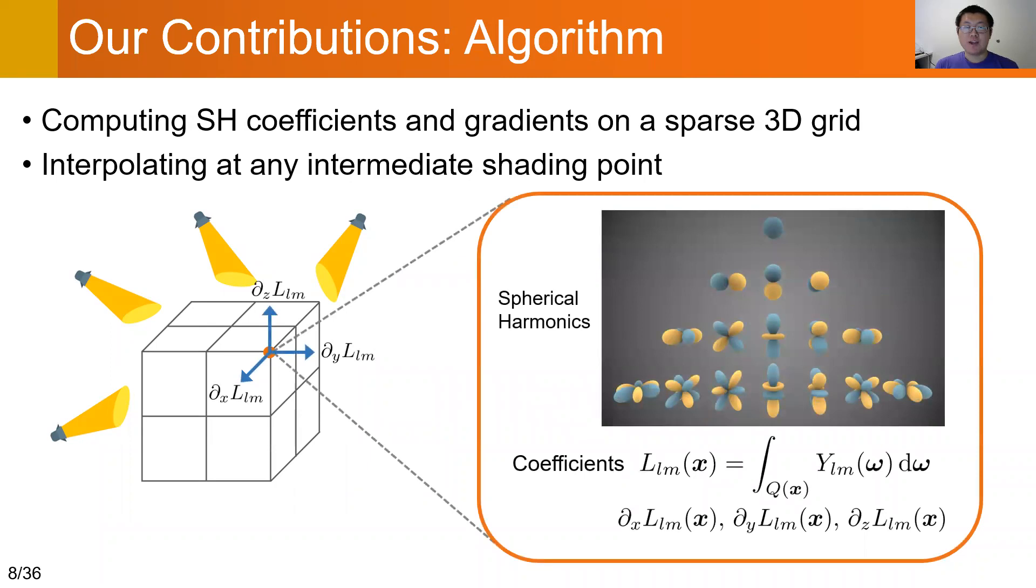We first compute SH coefficients and gradients on a sparse 3D grid. It is much faster because the number of grid points is much smaller than the number of shading points, allowing us to handle many area lights.